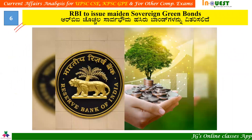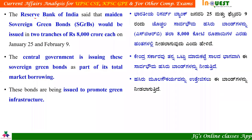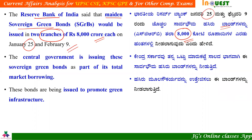We have come to the sixth article — RBI to issue Maiden Sovereign Green Bonds. The Reserve Bank of India has released that Maiden Sovereign Green Bonds will be issued in two tranches. The first tranche was released on January 19th and the second on February 19th.